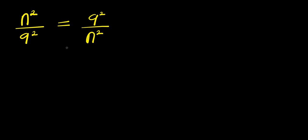Hello. How to solve this problem: we have n power 2 divided by 9 power 2, and this equals 9 power 2 divided by n power 2. We can easily cross multiply, meaning n power 2 multiplied by n power 2, and 9 power 2 multiplied by 9 power 2.